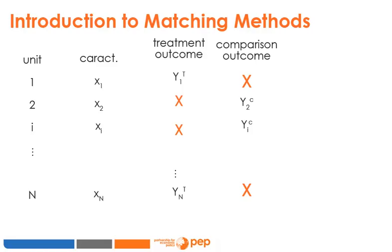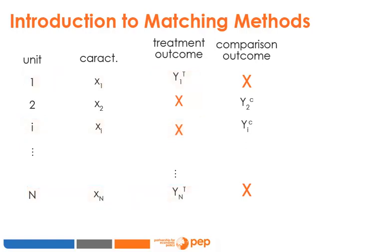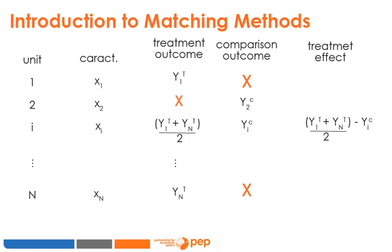Assume, for example, that units 1 and N are similar to unit I in terms of characteristics X, but 1 and N were chosen to receive the treatment. This difference in treatment status has to be due to chance, because otherwise the three units are identical. I will use the observed outcome among treated units to approximate the unobserved treatment outcome of I, had I actually received the treatment. I can approximate this counterfactual by using the average of both treated outcomes.